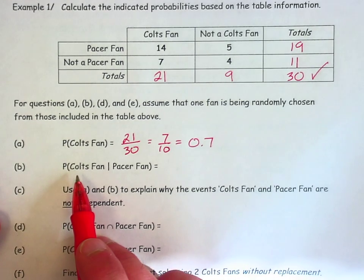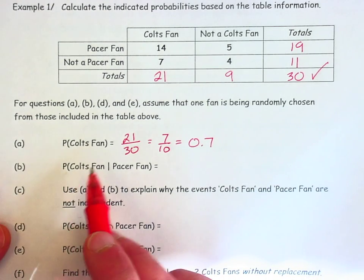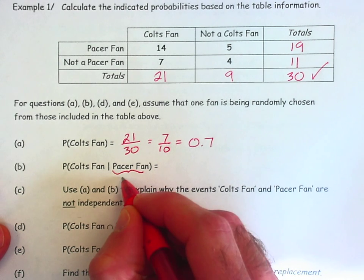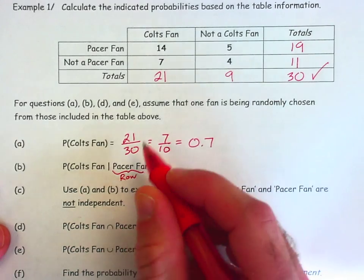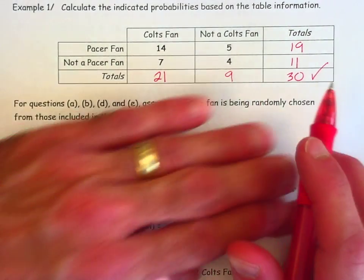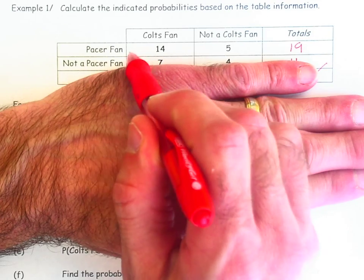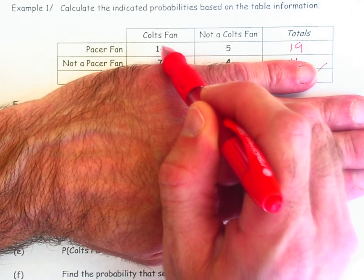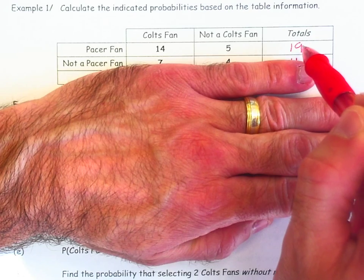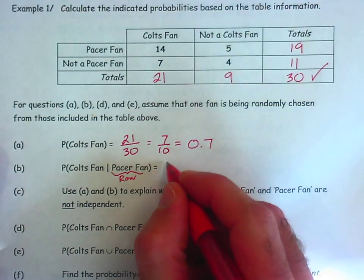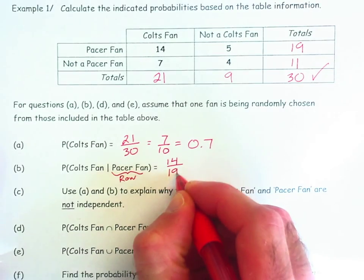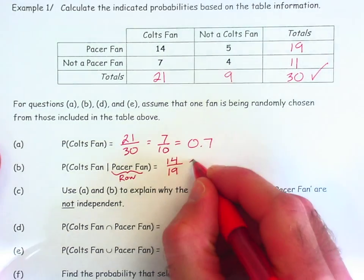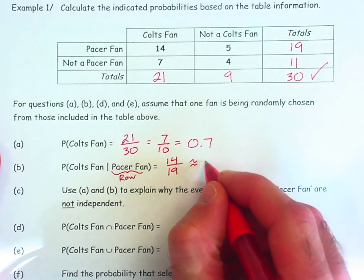So the difference in Part B, this is a conditional probability, and specifically, you're isolating yourself to the Pacer fan row. So looking at only this row, under the condition that we already know someone is a Pacer fan, what's the likelihood that they are a Colts fan? Well, there are 14 out of the 19 Pacer fans who are also Colts fans. That would be 14 out of 19. That's a perfectly fine answer, although for the next question, we'll want to change this to a decimal. That's about 0.74.